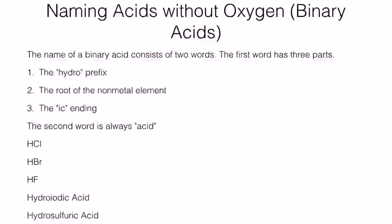In this video we're going to talk about how to name acids that do not contain oxygen. These are commonly just binary acids. The name of a binary acid consists of two words, and the first word has three different parts to it.